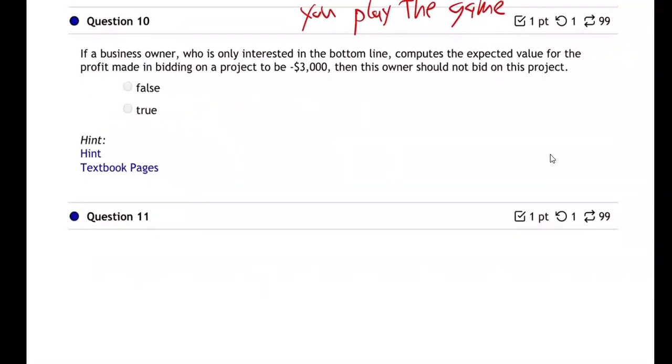If a business owner who is only interested in the bottom line computes the expected value for the profit made in bidding on a project to be negative $3,000, then this owner should not bid on this project.